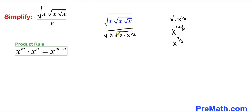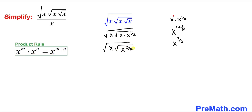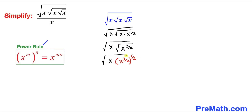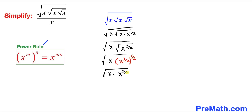Adding the exponents gives us x to the power 3 over 2. So we replace this whole part with x to the power 3 over 2, giving us the square root of x times the square root of x to the power 3 over 2. This inner part, x to the power 3 over 2, under a square root means we take the power 1 over 2. Applying the power rule — multiplying these two nested exponents — gives us x to the power 3 over 4.